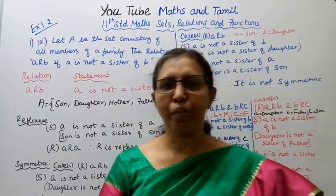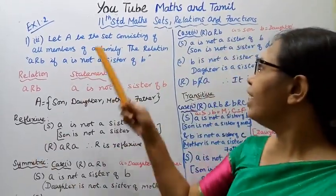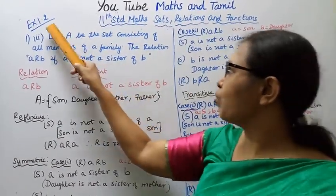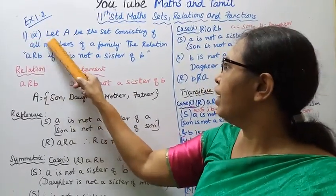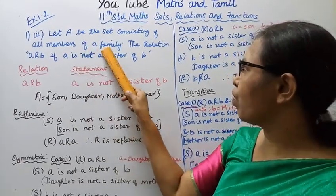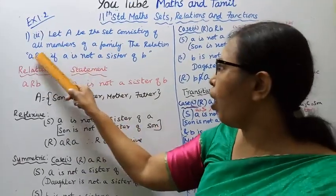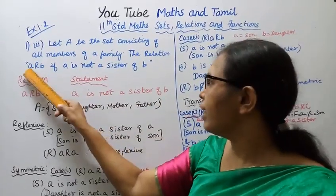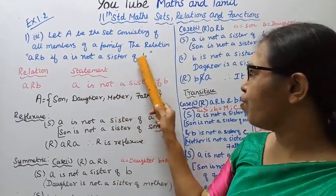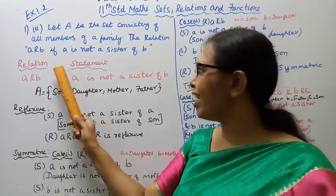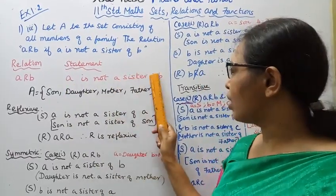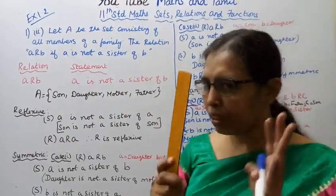Hello students, welcome to Max and Tamil channel. 11th standard — Sets, Relations and Functions, Exercise 1.2, Level 1, third subdivision. Let A be the set consisting of all members of a family. The relation R is defined as: a is related to b if a is not a sister of b.